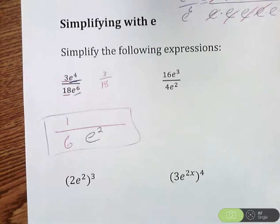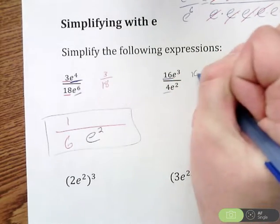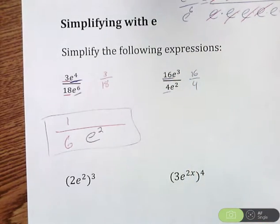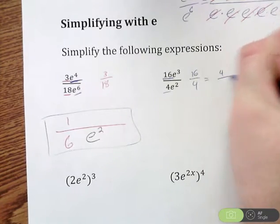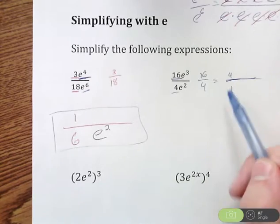I'm going to do the exact same process with this one here. Again, focus on the numbers first. So 16 over 4. Well, that is just, we're going to leave it as a fraction for now, 4 over 1. Both of them can be divided by 4.